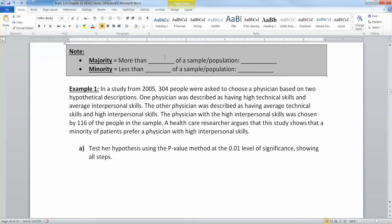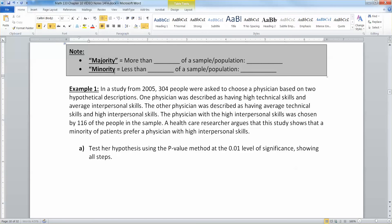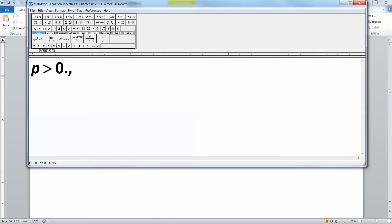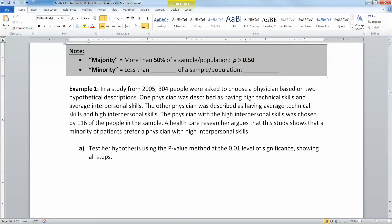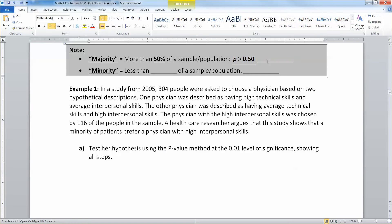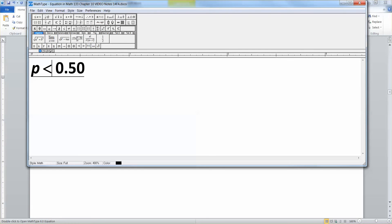Alright, so let's actually go and do it. Before I get into it real quick, we need to talk about the words majority and minority. A majority means more than 50%, which means, for your sample proportion, p would be greater than 0.50. Alright, then less than would be, or to me, less than 50% would be a minority.